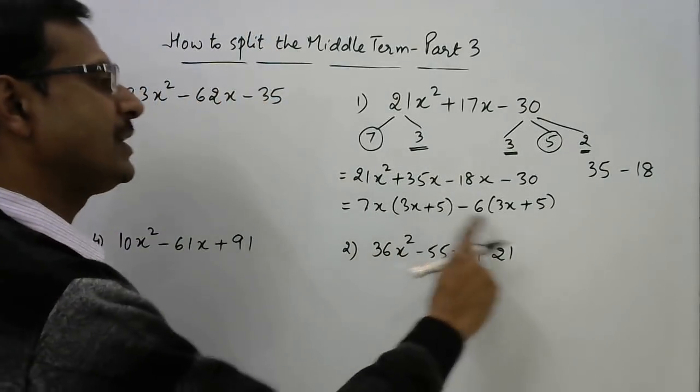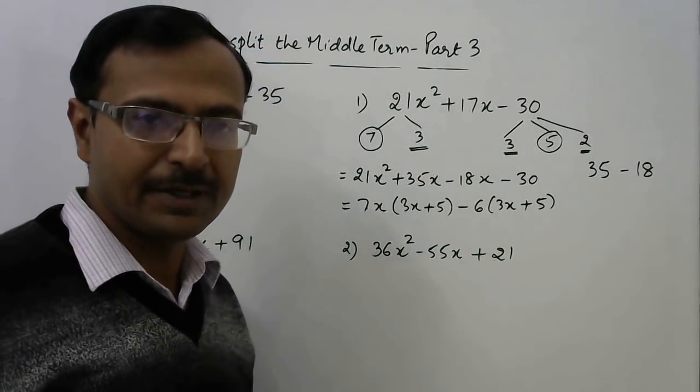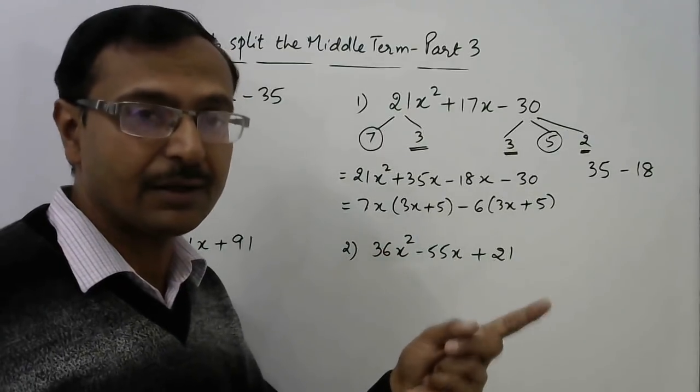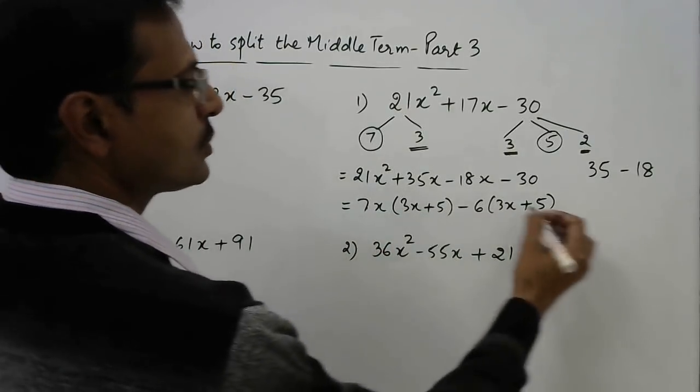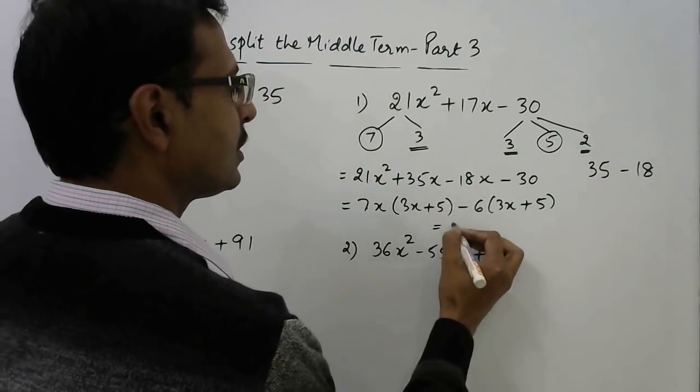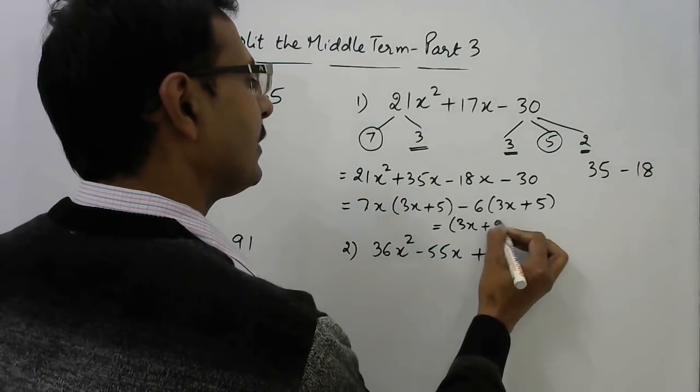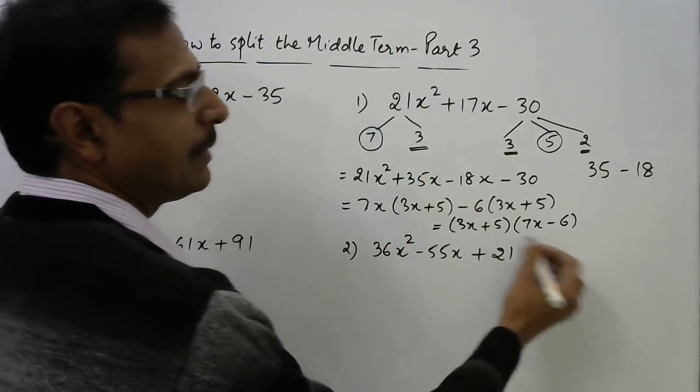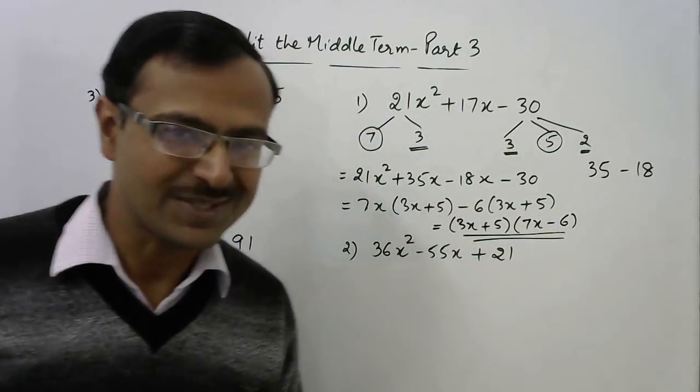So factorize it now 21x² plus 35x minus 18x minus 30. See 35 minus 18 so plus 35 minus 18 and now take the HCF of 21 and 35 is 7. 3x plus 5 will be left behind and both the terms are negative. So we will have negative common and 18 and 30 has an HCF of 6. So again 3x, this negative converts to positive because we have taken negative common. Now you see 3x plus 5 is the common term in the bracket.